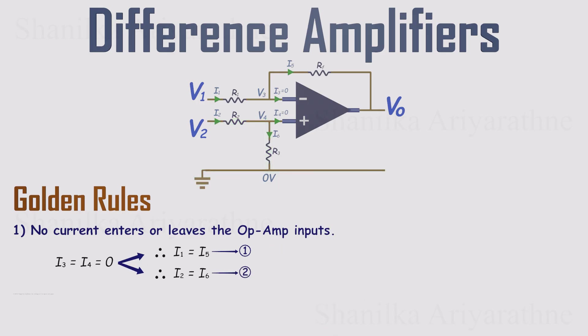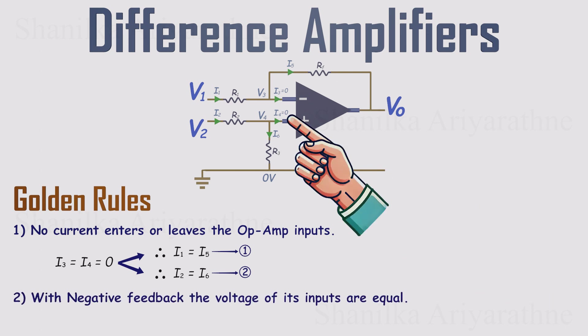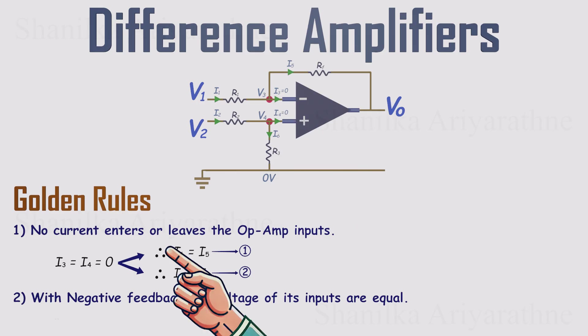Rule 2. With negative feedback, the op-amp drives its output so the inverting and non-inverting inputs sit at the same voltage. In other words, V3 equals V4. That's our third equation. With those three rules in place, we can now use Ohm's law to turn currents into voltages and see exactly how the output responds to the inputs.